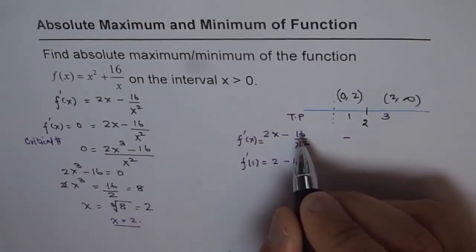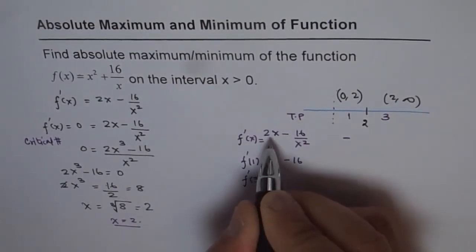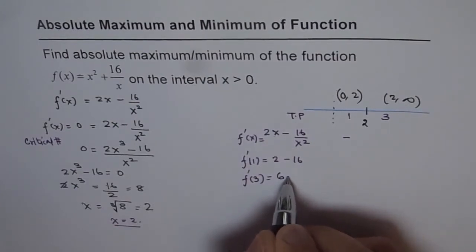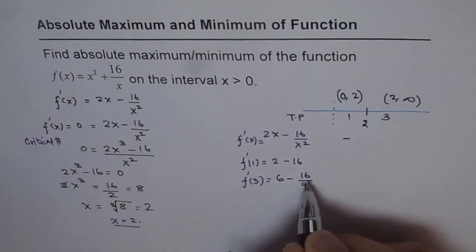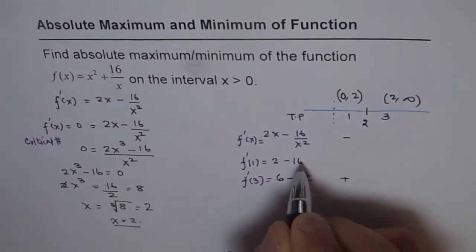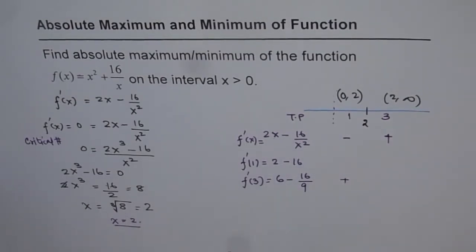If I plug in 3 here, then what do I get? f'(3) = 2 × 3 = 6 minus 16 divided by 3² which is 9. So this value is positive in nature. This is negative, so for this side we get a positive value.